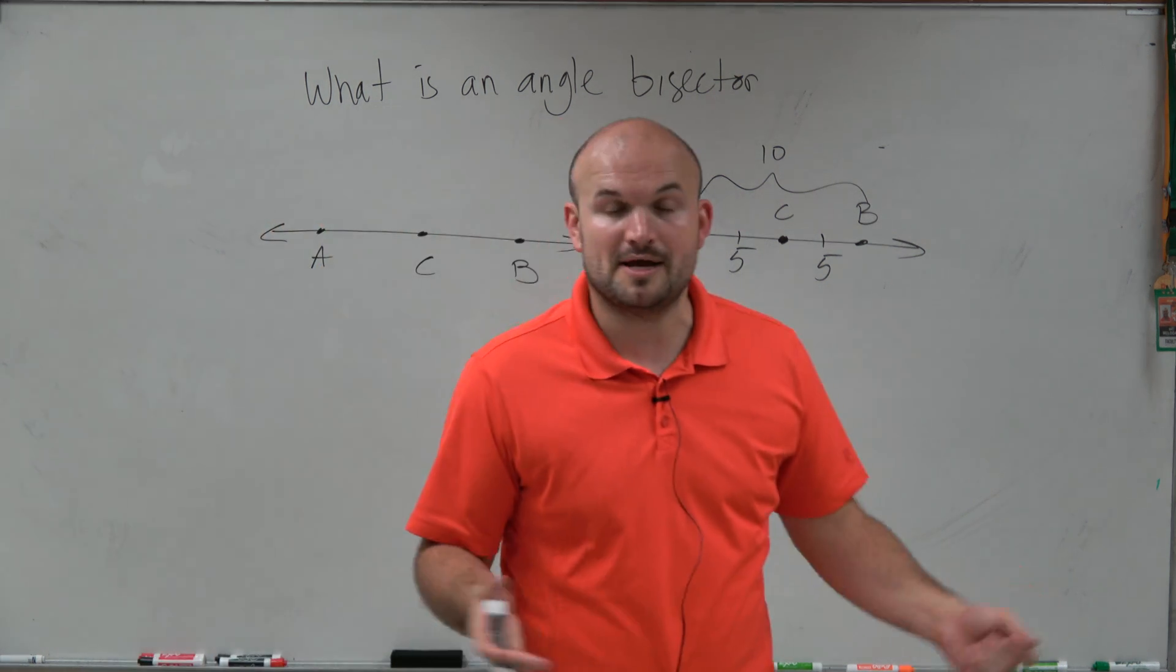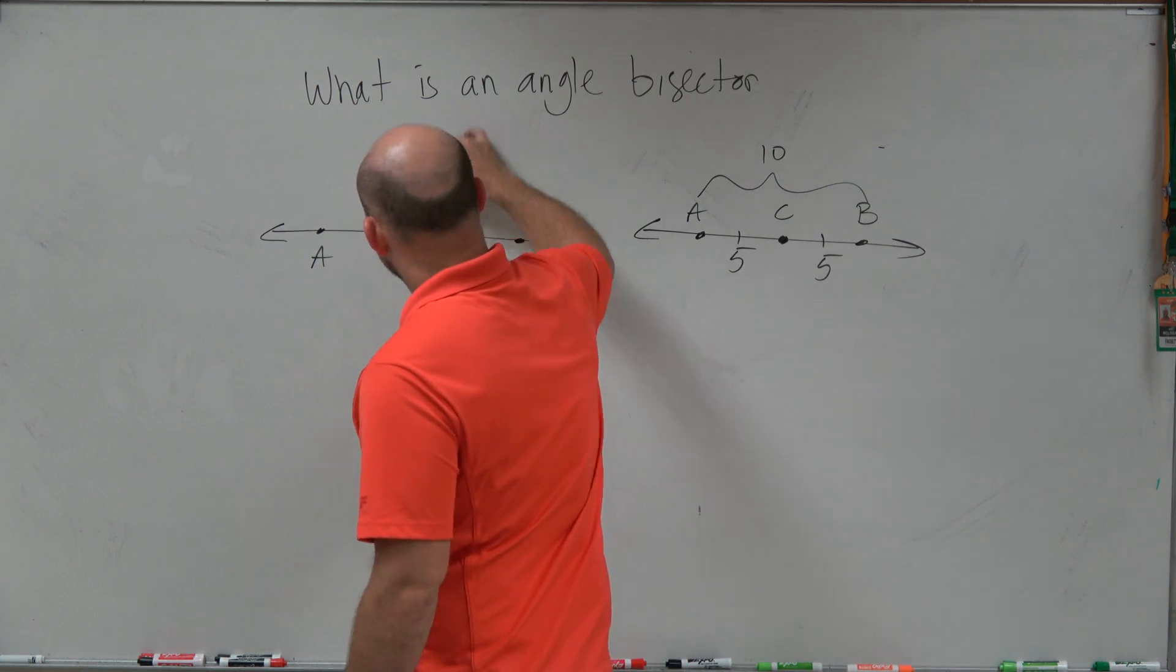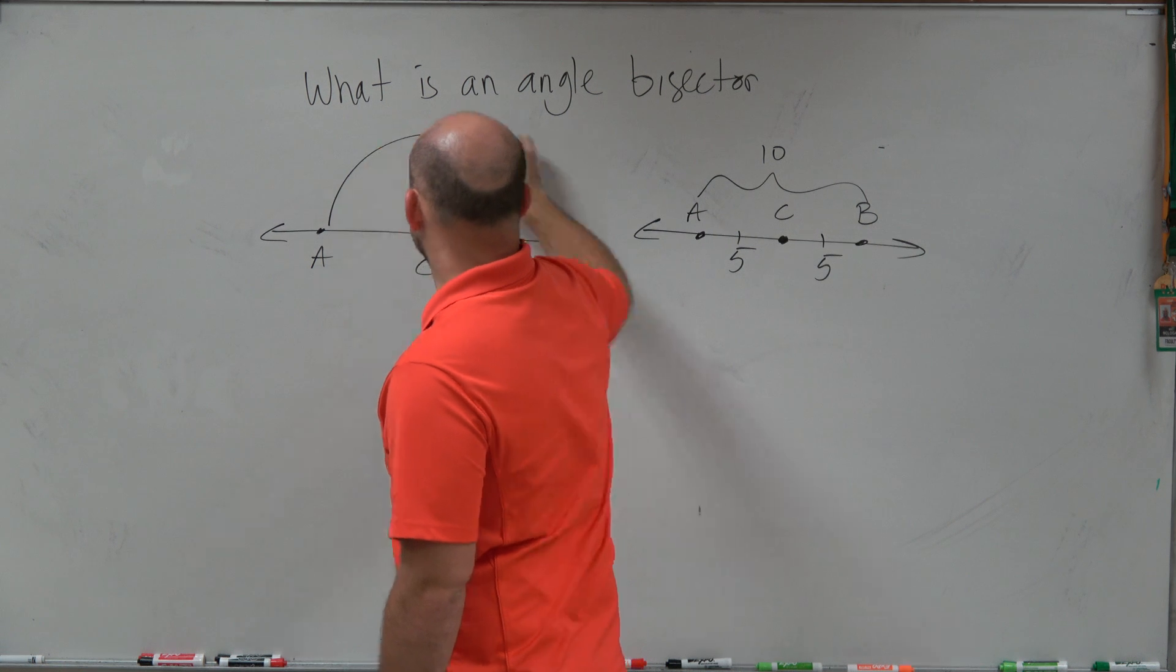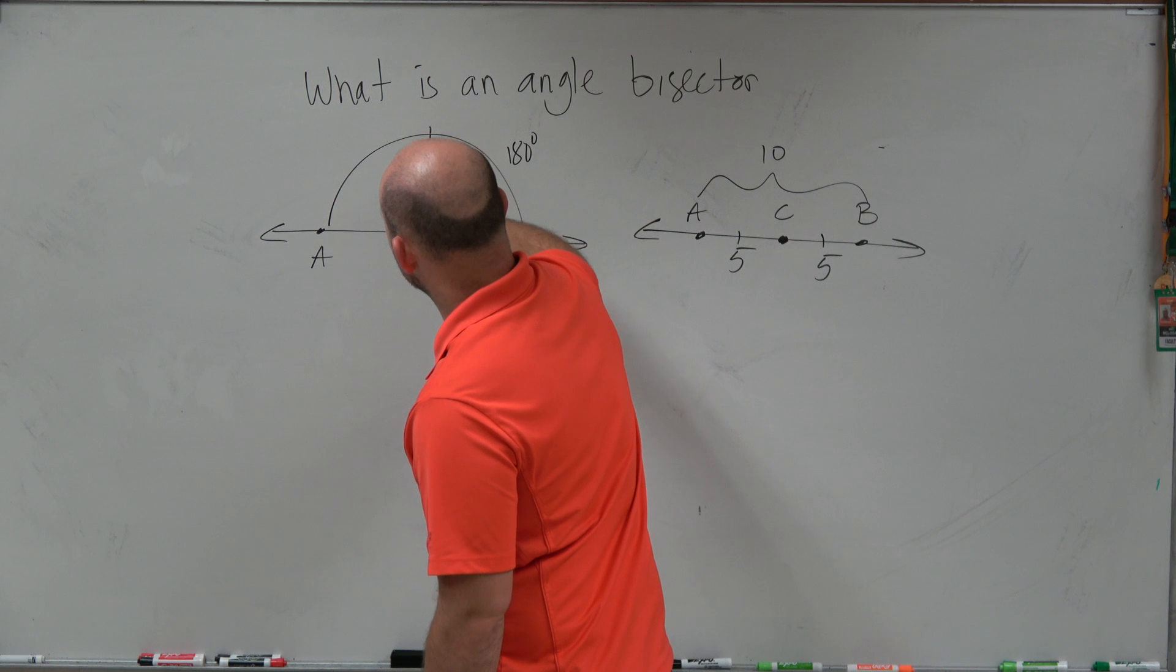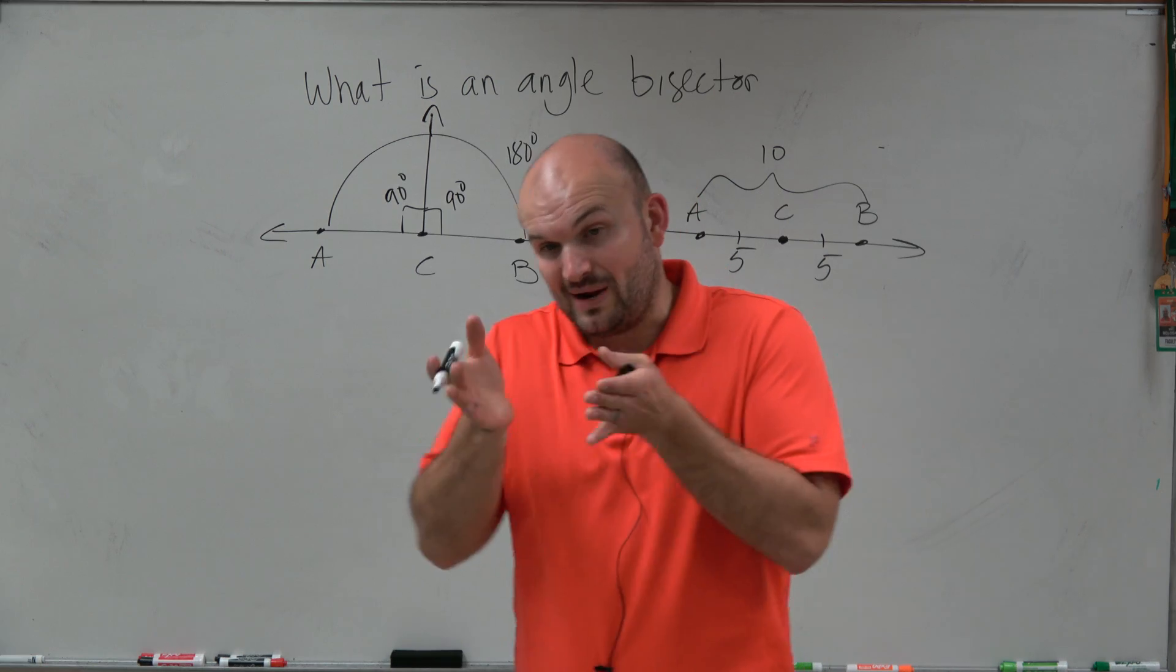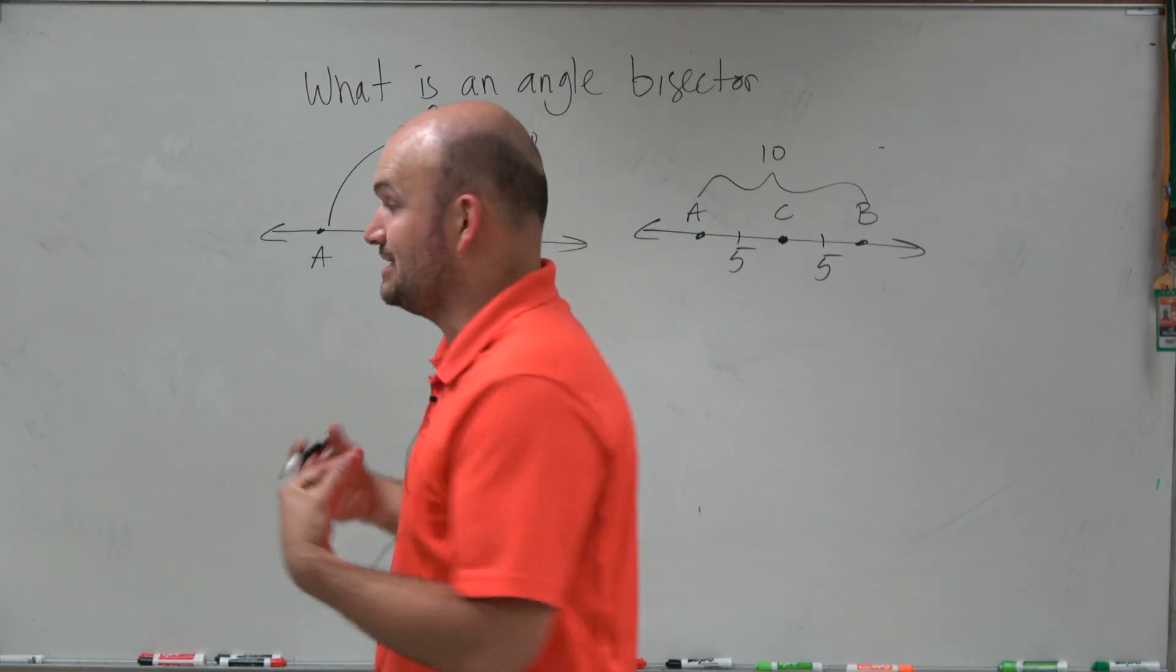Well remember we created a right angle was basically taking this 180 degrees, like from here to here is 180 degrees, and we broke it up into two right angles which are both at 90 degrees. So you could see whatever the line that breaks up that straight angle, it cuts it directly in half, is actually an angle bisector.